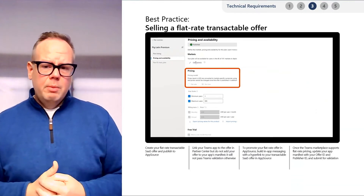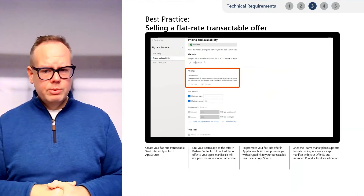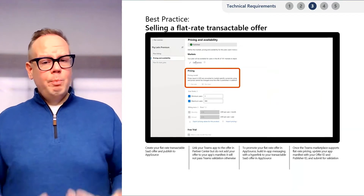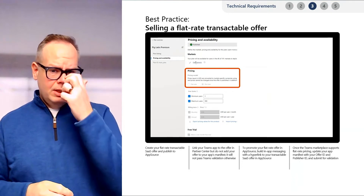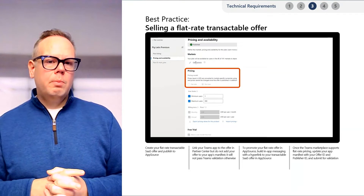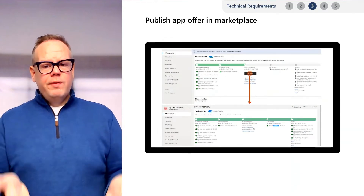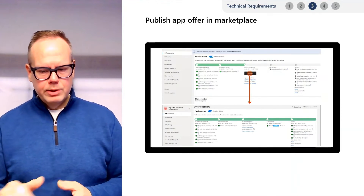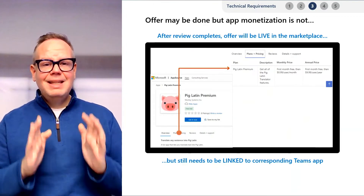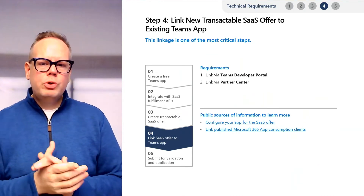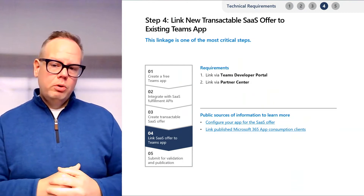If your Teams app has a flat rate pricing model, please proceed to publish. Users can still find your app via the Teams app store, but they'll need to purchase subscriptions directly through AppSource. You can provide in-app messaging alerting users that a purchase is required with a link directly to AppSource. Check the technical guide for additional steps and reminders around app policies for mobile experiences. Now that plans are defined, it's time to publish the offer to the public marketplace. At this point you've published your transactable offer in Partner Center, but there are a few additional steps needed to link your transactable offer with your Teams app — this linkage happens in two places: the Teams developer portal and Partner Center.